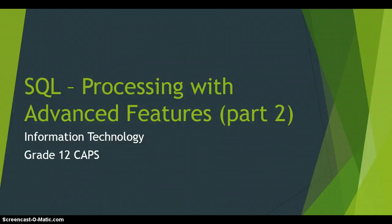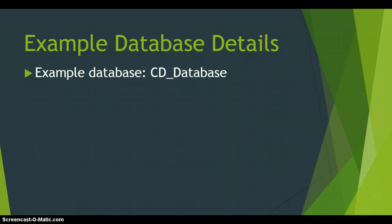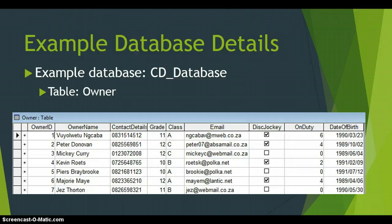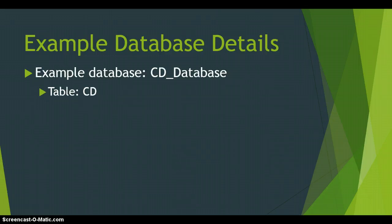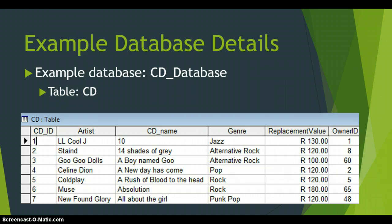In part two of the advanced features for SQL processing we're going to be looking at the SELECT statement. This is part of the Information Technology Grade 12 CAP syllabus. We've been working with a database called the CD database which has two main tables: the owner table with details about owners, and the CD table containing details about CDs such as the artist, CD name, and replacement value.